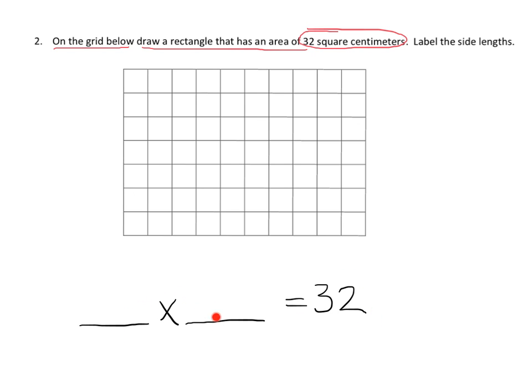So can we think of two numbers that when we multiply them together, we get 32? I could think of 4 times 8.